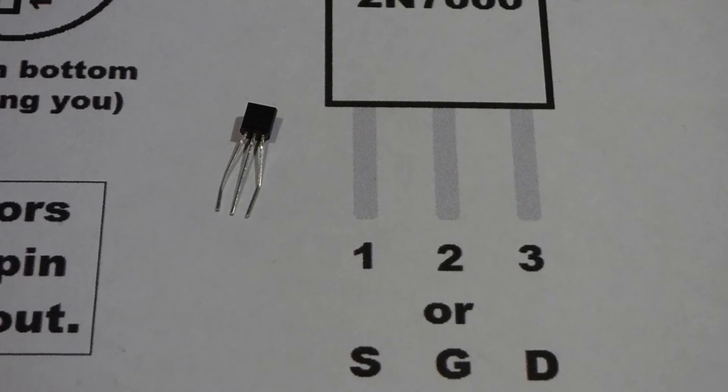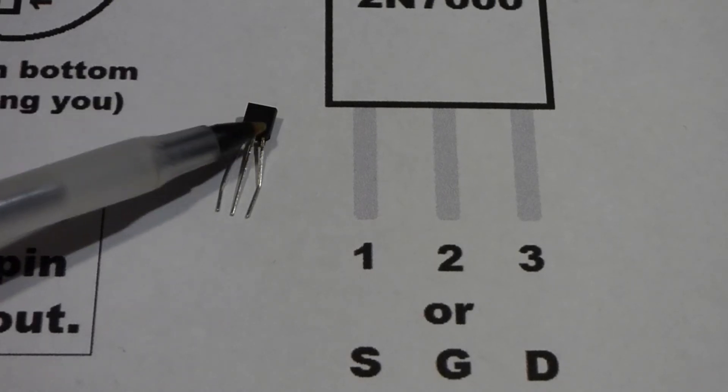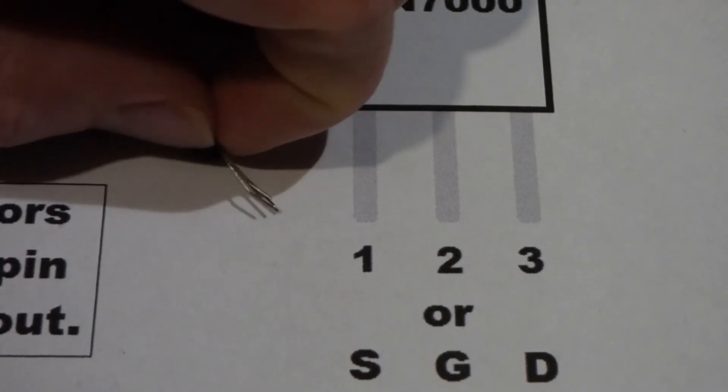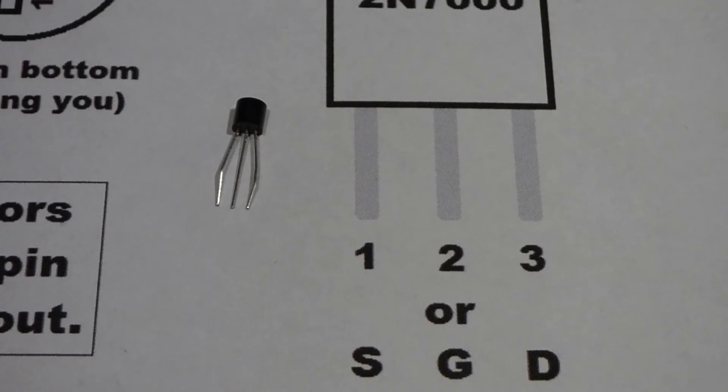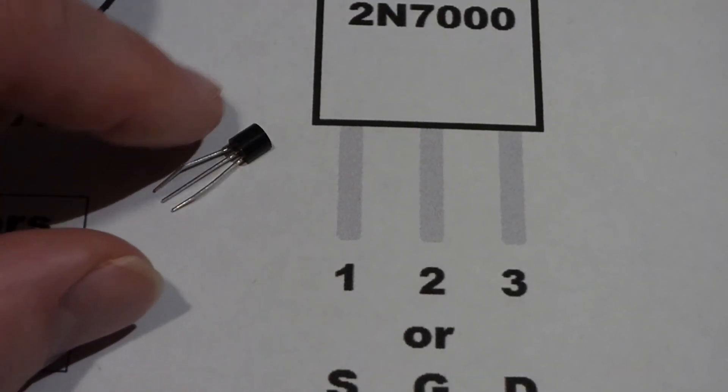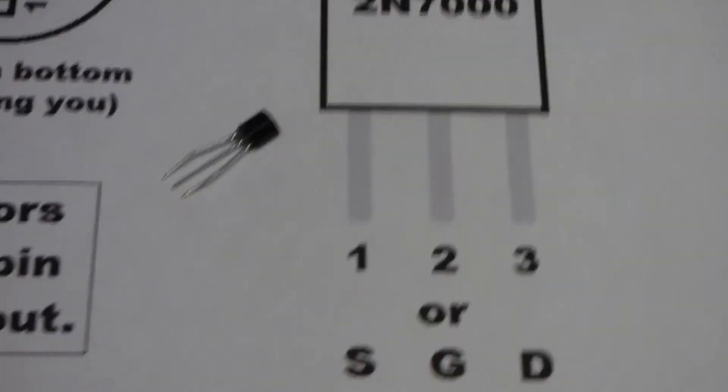And now something I almost forgot to mention. Right now I have the transistor with the flat edge facing us. I just went over how that works. Now I'm going to turn the transistor so it's facing away from us. Now a lot of people draw their diagram like that with the transistor facing away.